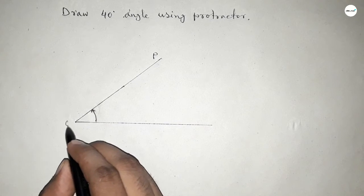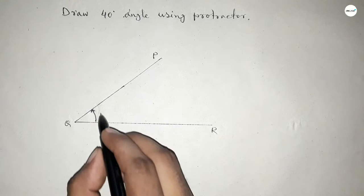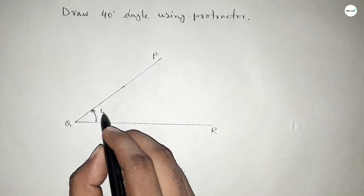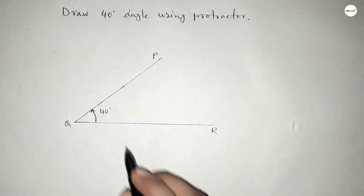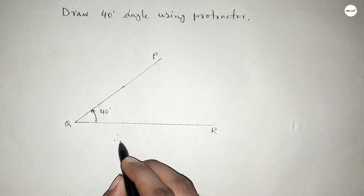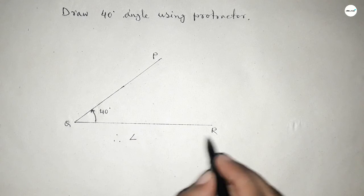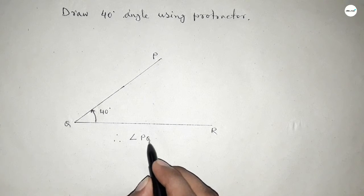This is PQ and this is R. So angle PQR is 40 degree angle. Therefore, angle PQR equal to 40 degree.